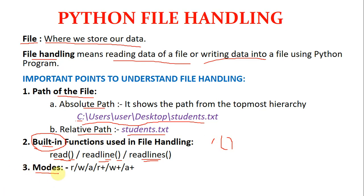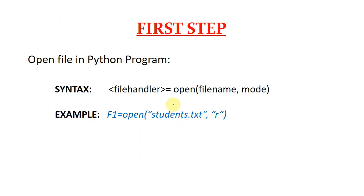Next you need to understand modes. There are six types of modes: r, w, a, r+, w+, and a+. Read mode means when we use 'r', we are going to read the data of the file. When we want to write some data into a file, we use 'w' mode. We will understand all these modes in detail later on.